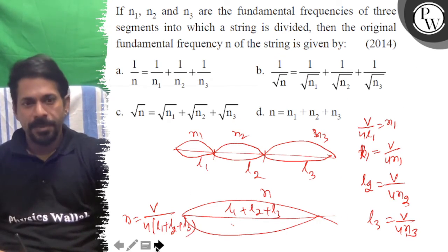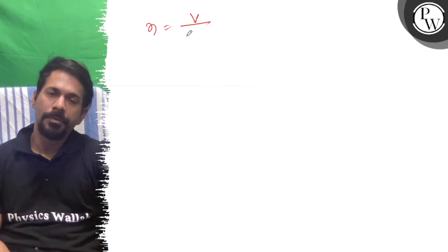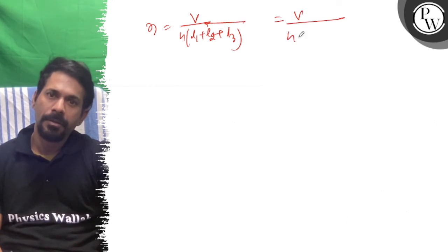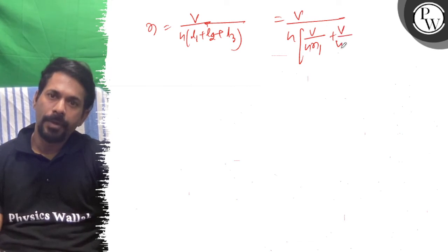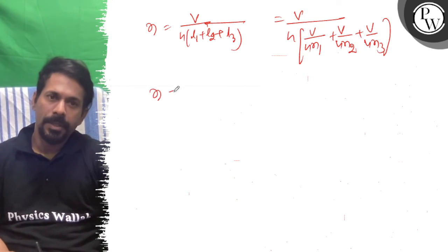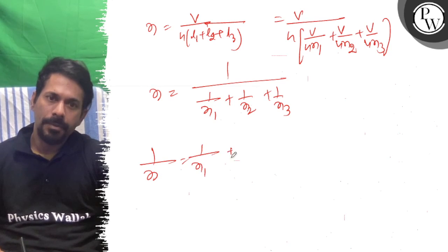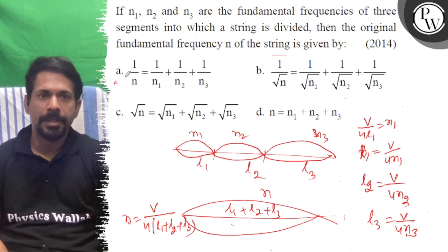Substituting in the values, we get 1 over N is equal to 1 over N1 plus 1 over N2 plus 1 over N3. So the right answer is option A. All the best!